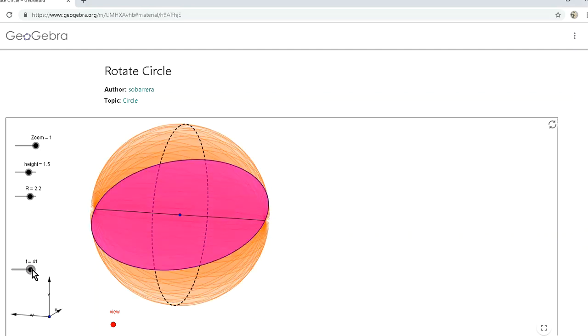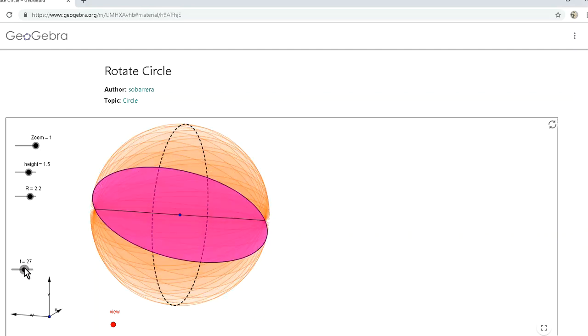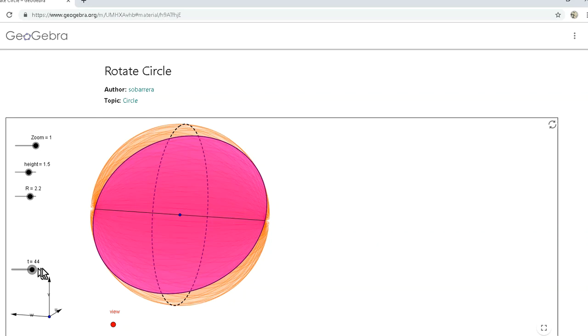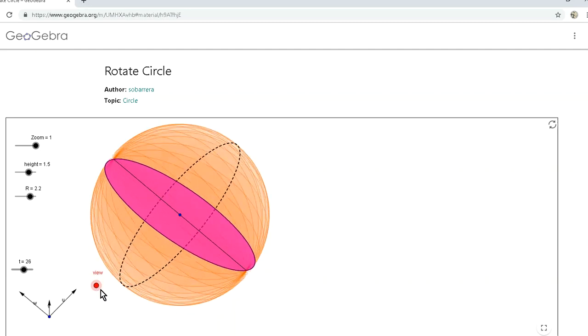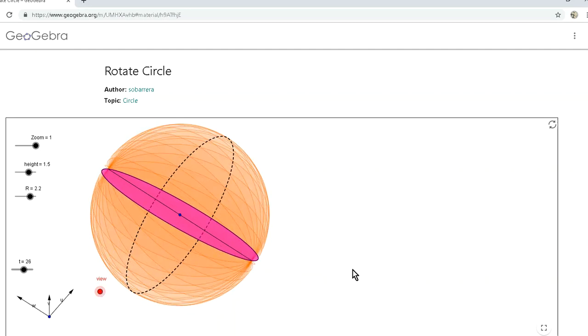So we rotate this circle about its diameter. What you would get is a sphere. All righty, so that basically shows us how to generate the three options that we have, and the correct answer is going to be a cylinder. All righty.